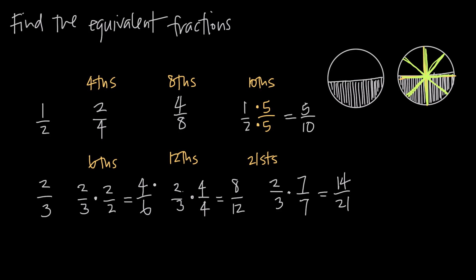In all of these examples, we've started with a completely reduced fraction and gone up to equivalent fractions that are not reduced. When you go the other way — starting with a fraction like two over four, four over eight, or five over ten and trying to get back to one half — we call that reducing fractions. To do that, we look for a common factor between the numerator and the denominator, then divide both by that common factor.